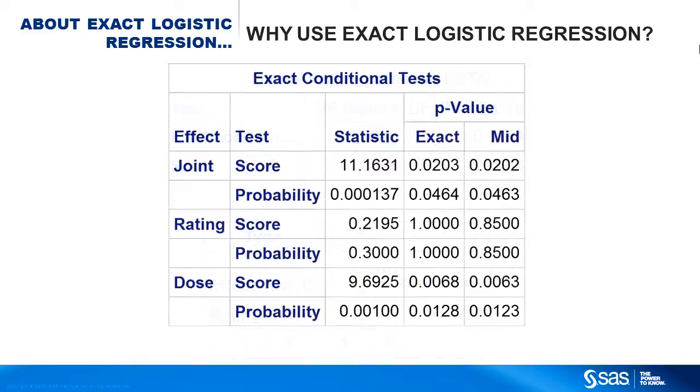However, the joint test for the exact logistic regression says that not all your parameters are zero, and sure enough, rating is not significant, but dose is a significant effect. So the exact method identifies the significant effect, while the unconditional method fails.